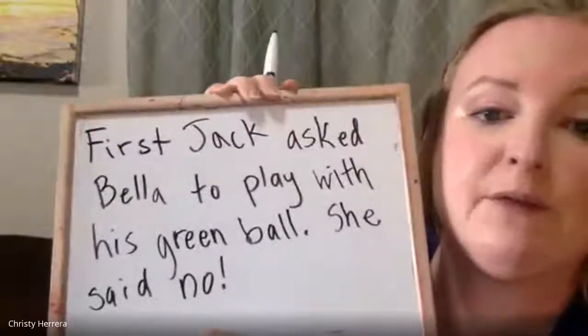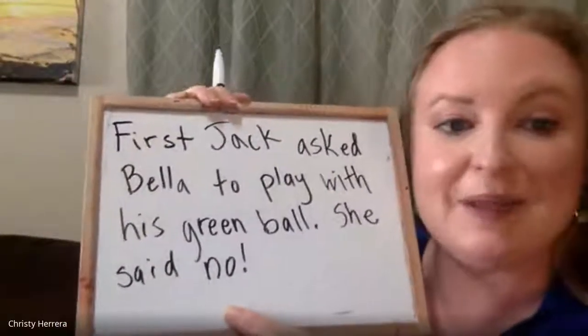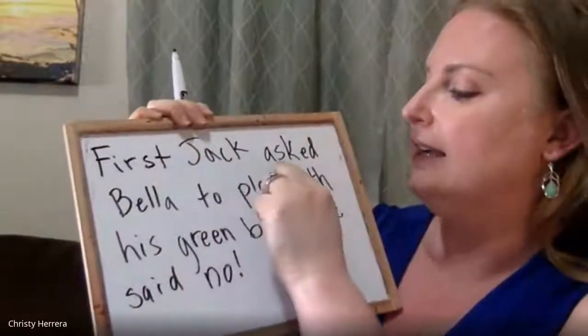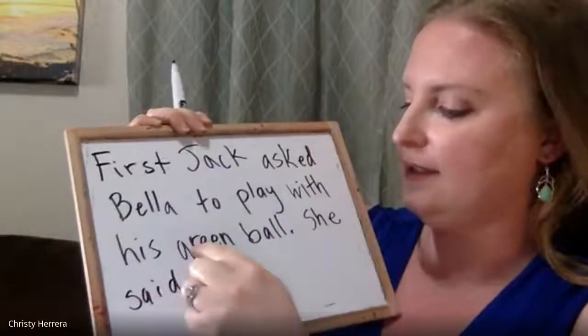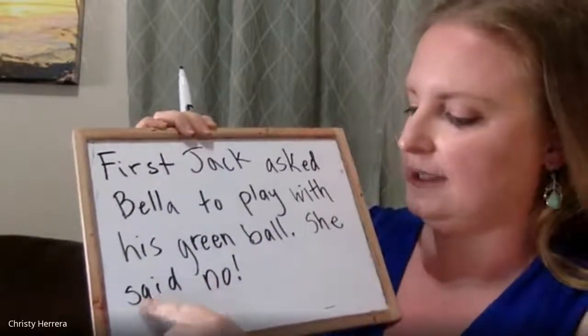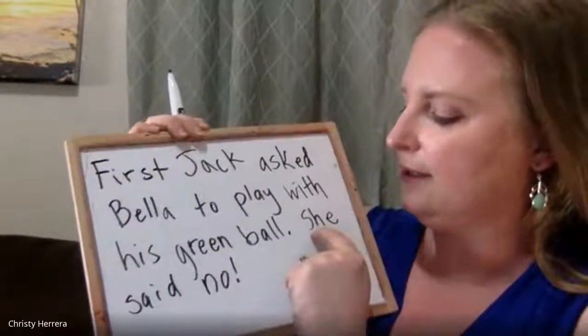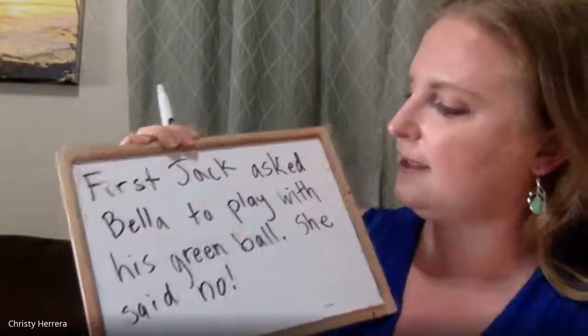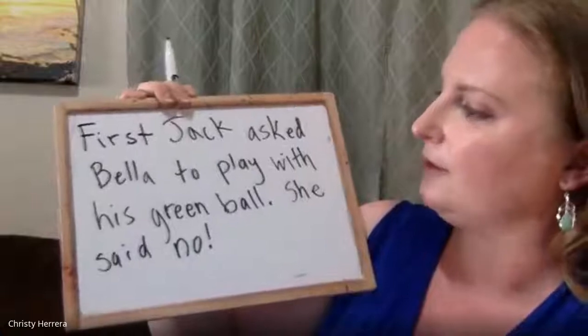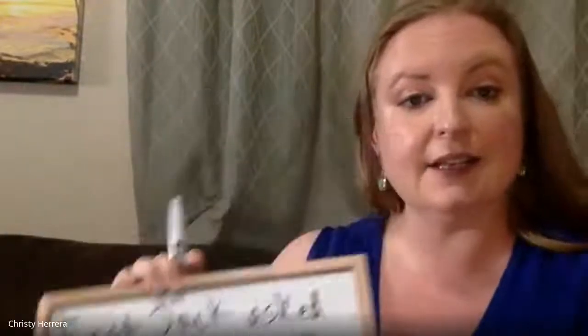Now that I've written it, I have to read it again to make sure it's right. First, Jack asked Bella to play with his green ball. Period. She said no. That seems all right — I don't see anything I need to change. I have a capital at the beginning of my sentences, punctuation at the end, my two names are capitalized, and I think all the words are spelled right. I think I'm ready for the next sentence. So now what I want you to do is write the next part — the middle part and the end part. Remember, the middle can start with 'next' or 'then,' and the end part can start with 'at the end' or 'finally.' Can't wait to see what you wrote.